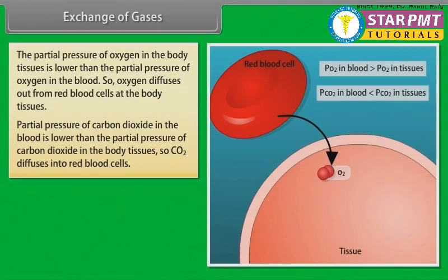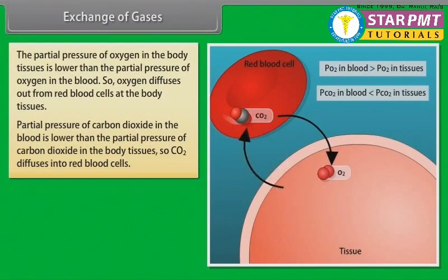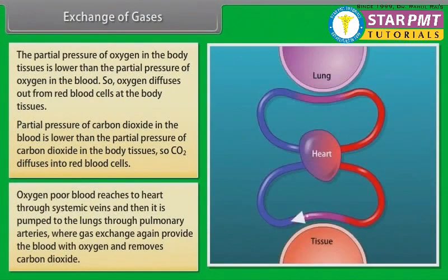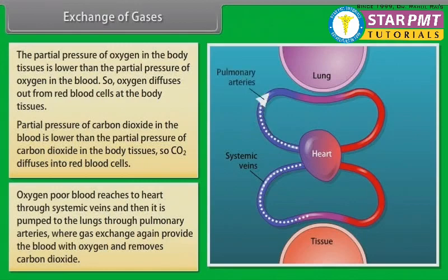The partial pressure of carbon dioxide in the blood is lower than the partial pressure of carbon dioxide in the body tissues, so CO2 diffuses into red blood cells. Oxygen-poor blood reaches the heart through systemic veins and then is pumped to the lungs through pulmonary arteries, where gas exchange again provides the blood with oxygen and removes carbon dioxide.